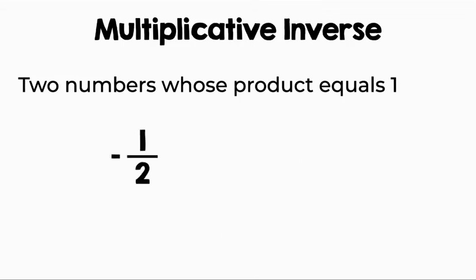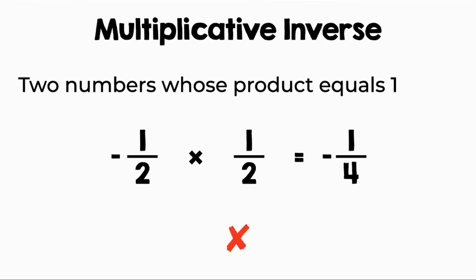Are negative one half and one half multiplicative inverses? Well, let's multiply and find out. We'll multiply numerator times numerator and denominator times denominator. We will get one fourth. That will be a negative since a negative times a positive is a negative. That means that no, they are not multiplicative inverses because their product is not one.